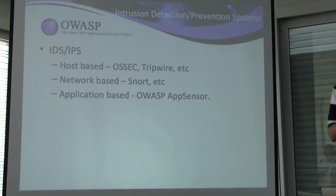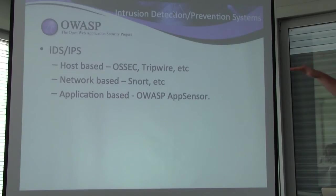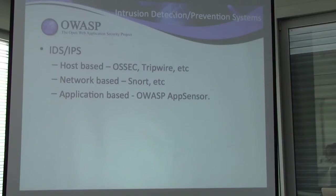AppSensor is a type of intrusion detection and prevention system. You're probably mostly familiar with network-based and host-based systems — host-based systems sometimes include file integrity monitoring as well. But in terms of doing it at the application layer, this is OWASP AppSensor. There's really nothing else out there that talks about this and gives you ideas, guidance, planning, suggested code, and methods of implementation.